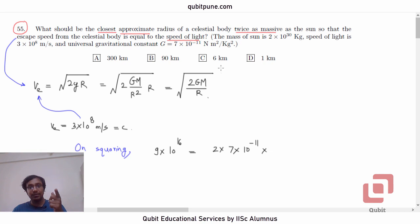Now, m is the mass of the celestial body. They are saying it is twice the mass of the sun, so let us take it as 4×10^30. Please note, mass of the sun is 2×10^30, and mass of the body is 2 times mass of the sun. So we are substituting this mass of the body here. Hence, it has become 2×2, 4×10^30, divided by r.